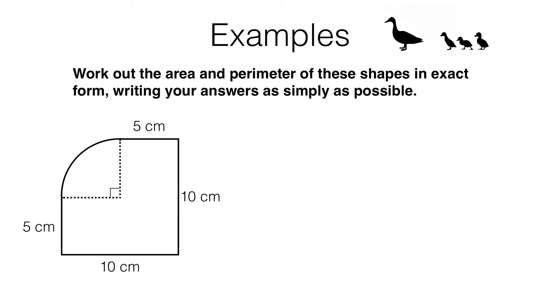This second example is a little more complicated. We have a shape that looks like it was once a square, but one of the corners has been cut in such a way that it now forms a quarter of a circle. Let's try to work out the area.